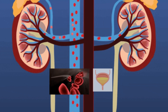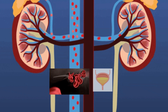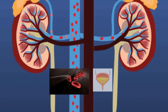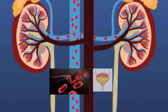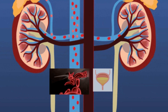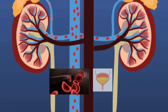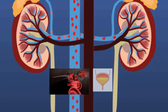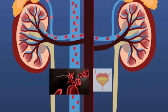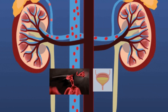Your kidney is made up of about a million filtering units called nephrons. Your kidney also removes acid produced by the cells of your body and maintains a healthy balance of water, salt, and minerals such as sodium, calcium, phosphorus, and potassium in your blood.